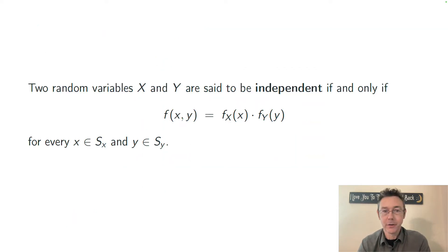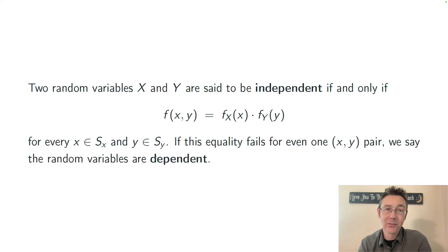Last thing I want to talk about here is that two random variables, X and Y, with a bivariate distribution, are said to be independent when the probability mass function, the joint probability mass function, is always equal to the product of the marginal probability mass functions for the corresponding values. If this fails for even one value, then the random variables are said to be dependent.